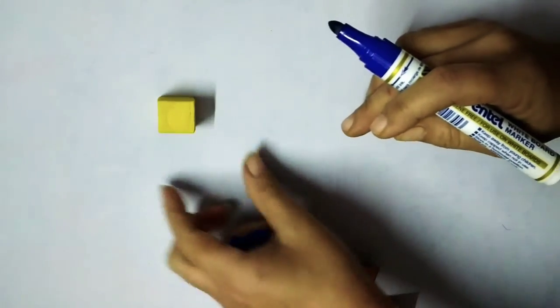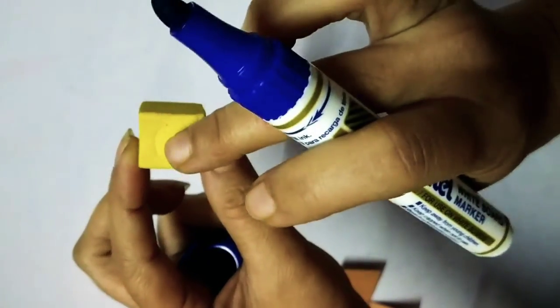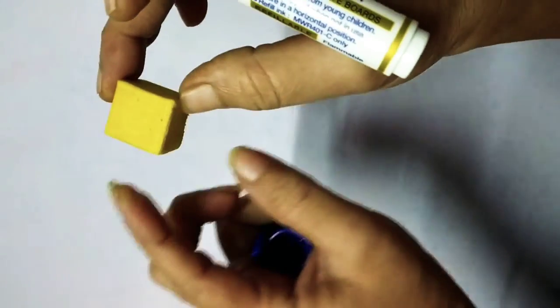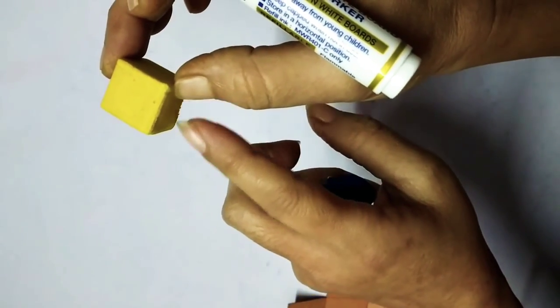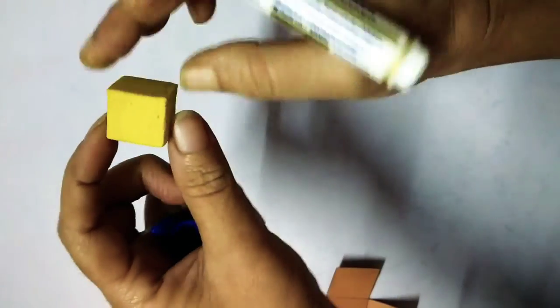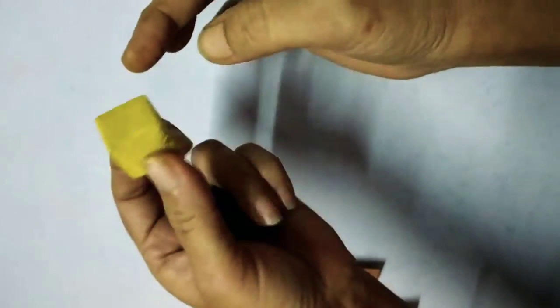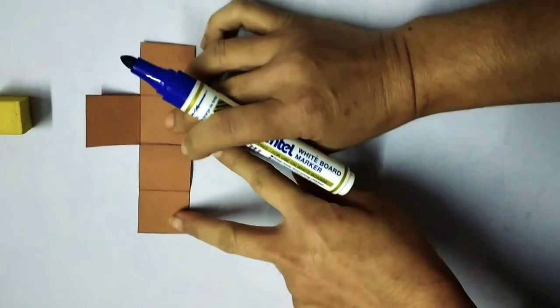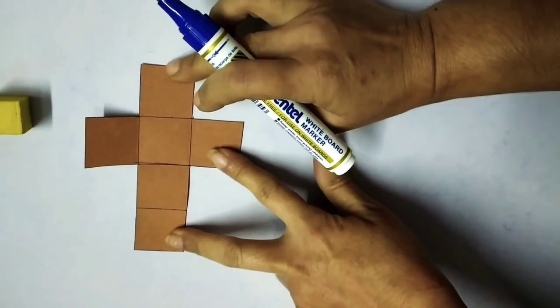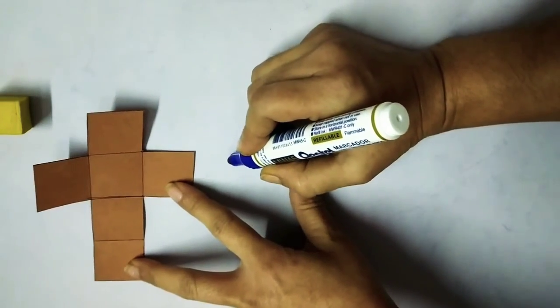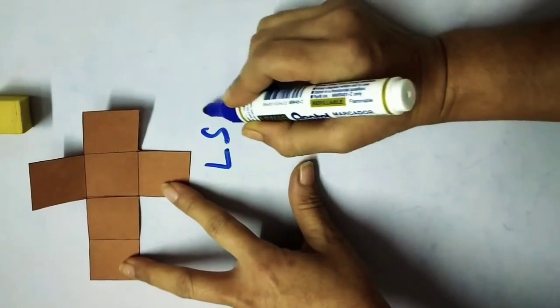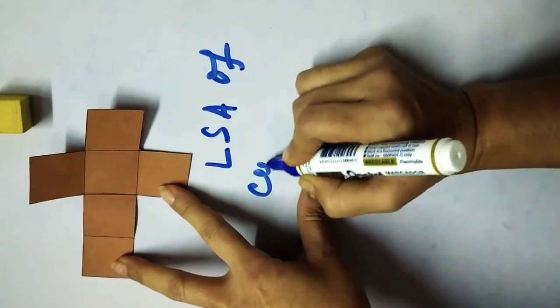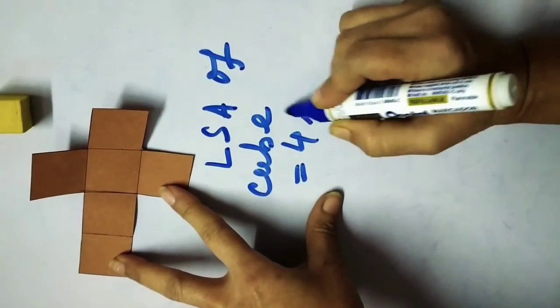Now we find the lateral surface area. Lateral surface area means excluding the top and bottom — only the four lateral faces. There are four lateral faces, and all four are congruent squares. So the lateral surface area of a cube is equal to four L squared.